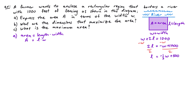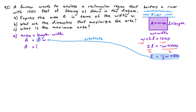Now that we have L in terms of W, we can make a substitution. Replacing L in our area equation with negative one-half W plus 500, our area equals negative one-half W plus 500 times W. Distributing the W gives us area equals negative one-half W squared plus 500W.